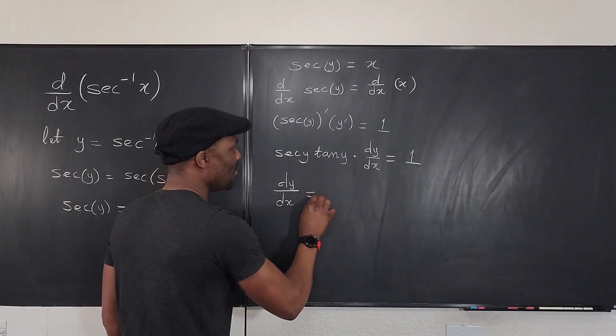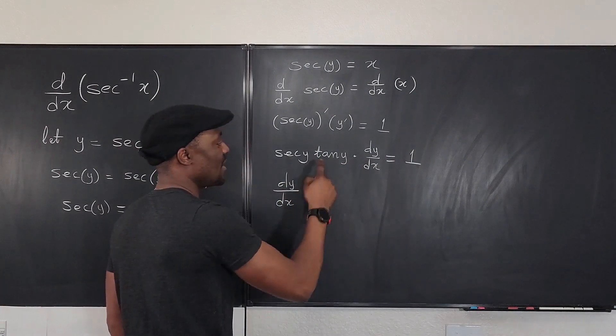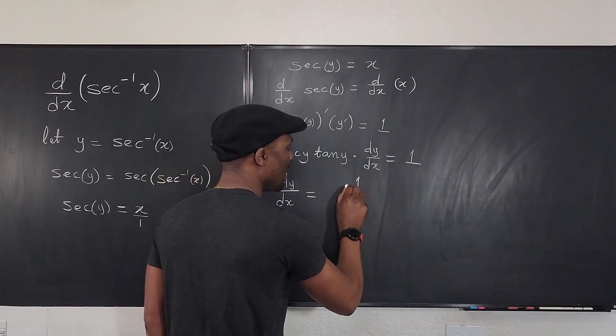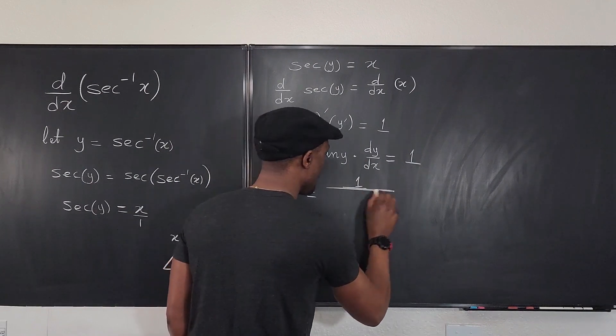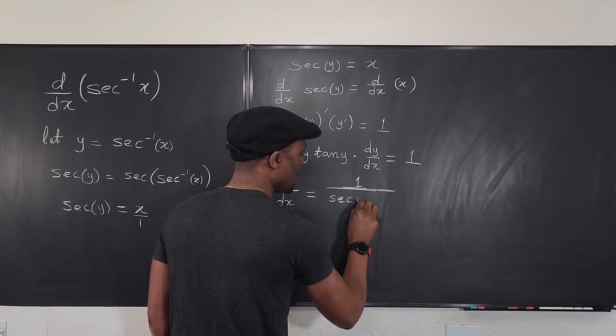So let's isolate dy/dx. We're going to get dy/dx will be equal to—you divide both sides by secant y tan y—it's going to be one over secant y tan y.